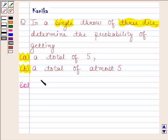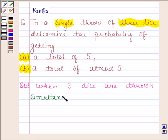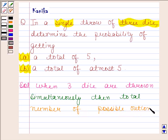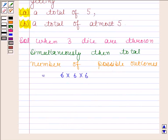Now when three dice are thrown simultaneously, then total number of possible outcomes is equal to 6 into 6 into 6, that is 216.